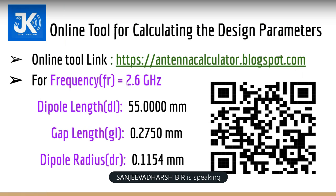Here we are going to design it for 2.6 gigahertz, and we have calculated dipole length, gap length, and dipole radius from this tool in millimeters. For dipole length I have given the notation DL, for gap length GL, and for dipole radius DR. These are the notations we are going to use in ANSYS HFSS software.